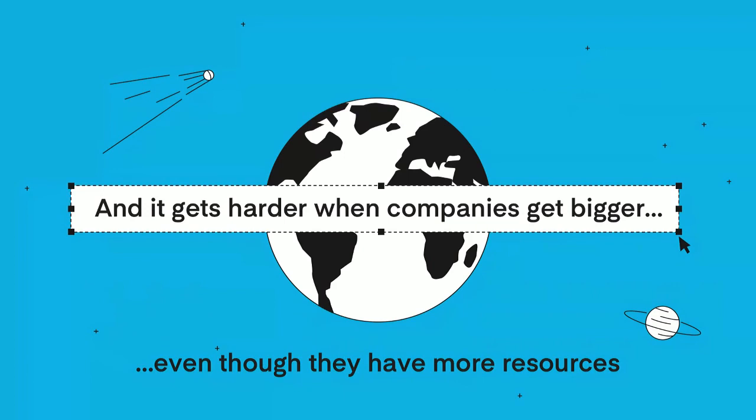Marketers in larger companies obviously have more resources. In our sample, they were almost twice as likely as marketers at small businesses of maybe 50 employees to report using an external agency or in-house designers as their primary method of design. And yet, these same marketers still see themselves putting out bad design at a faster rate. So more design resources doesn't always lead to better design outcomes — and that's kind of weird.